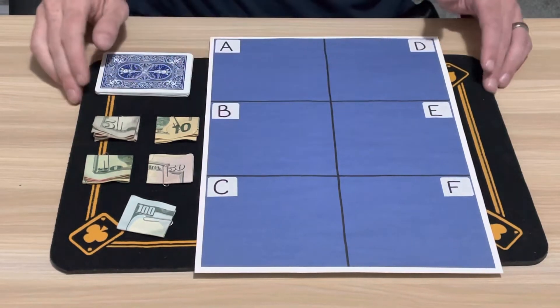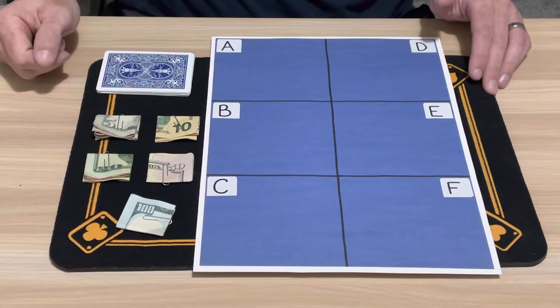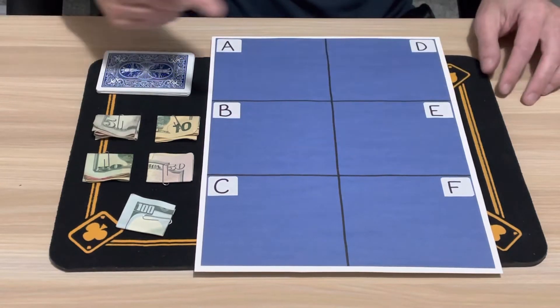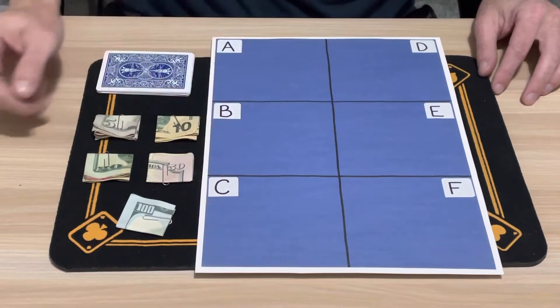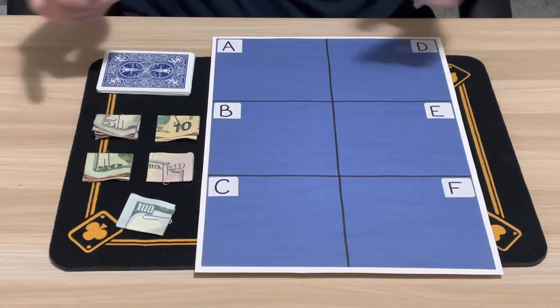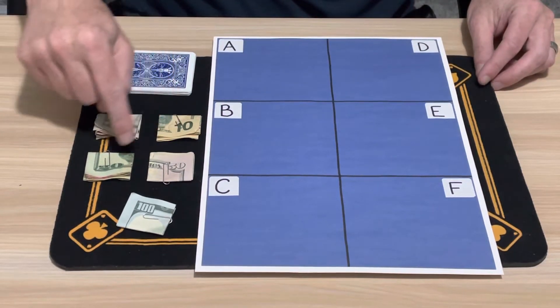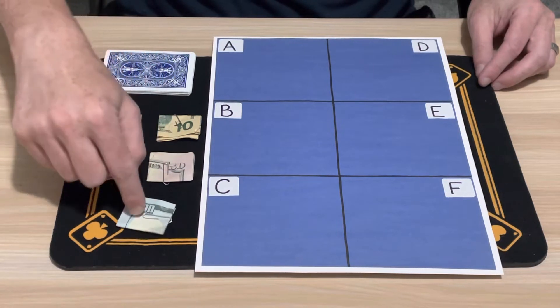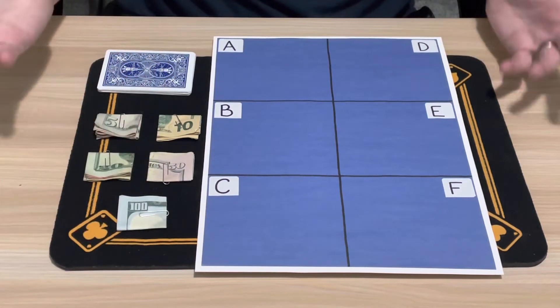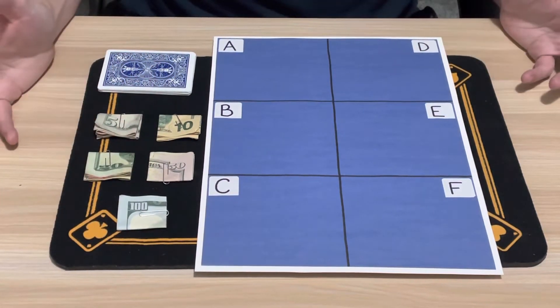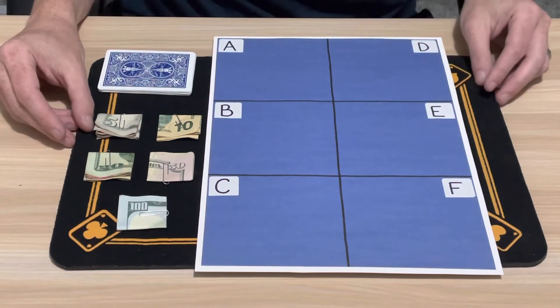What I've got on the table here is some cards that we'll get to, a board with A, B, C, D, E, and F spaces, and I've got $185 on the table. I've got a $5, a $10, a $20, a $50, and a $100 bill. All together that totals $185, and that's potentially what the spectator can win if everything goes well for them.